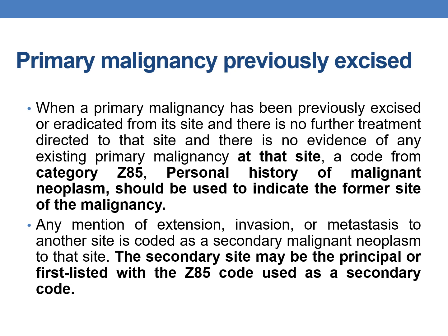First, primary malignancy previously excised. When a primary malignancy has been previously excised or eradicated from its site, and there is no further treatment directed to that site, and there is no evidence of any existing primary malignancy at that site, then a code from category Z85 — personal history of malignant neoplasm — should be used to indicate the former site of malignancy.